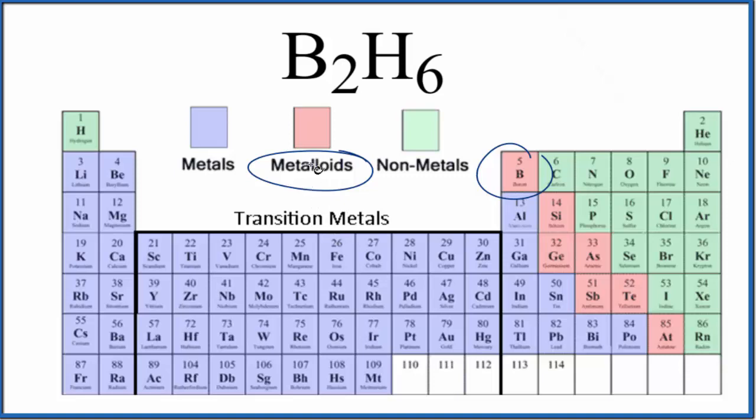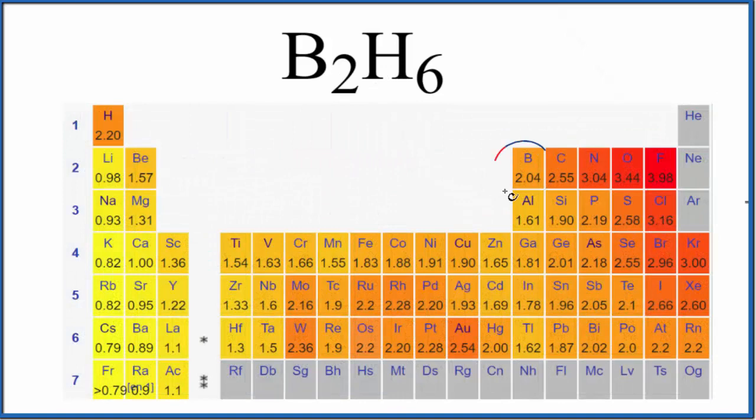Let's look at the difference in electronegativity between boron and hydrogen. So here's boron 2.04 and hydrogen 2.20. Hydrogen is more electronegative, not by a lot, but it's more electronegative, and when we look at oxidation numbers, the more electronegative element will be assigned the electrons.